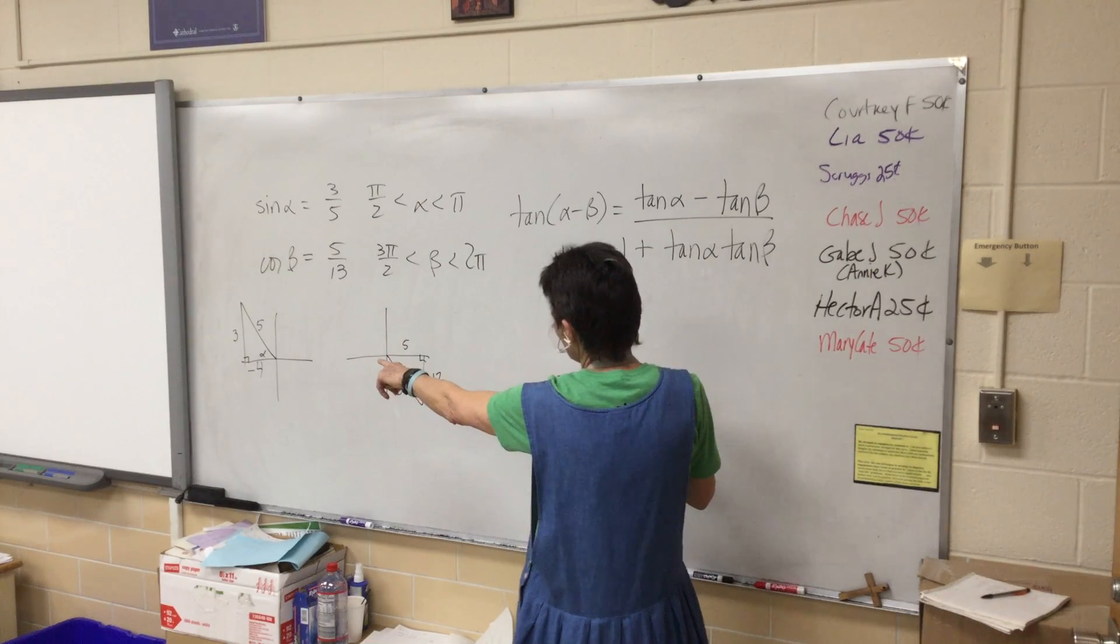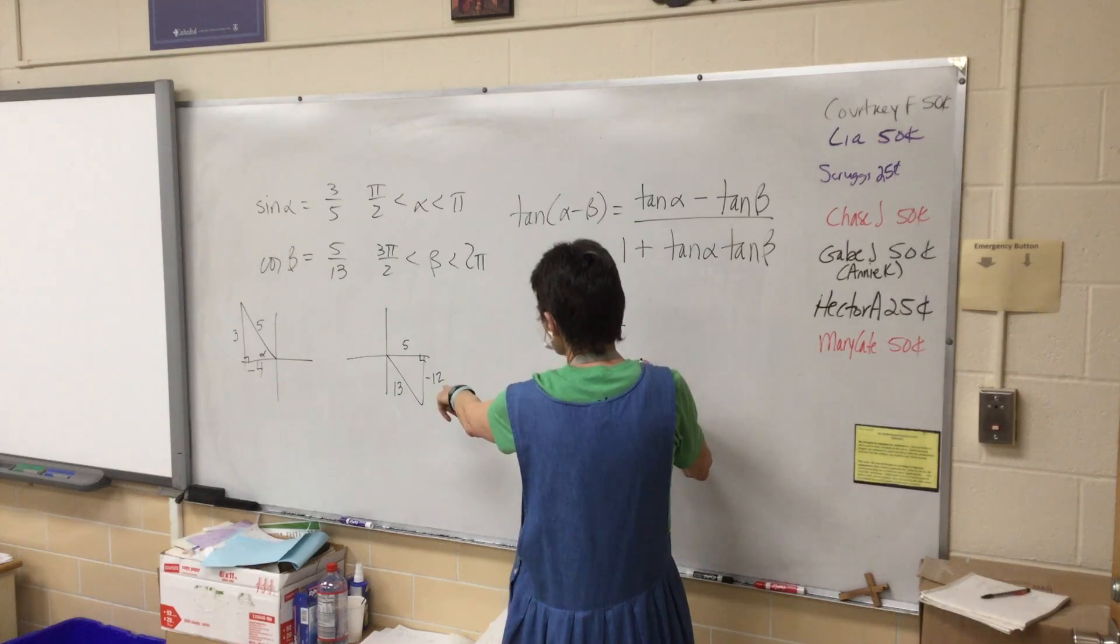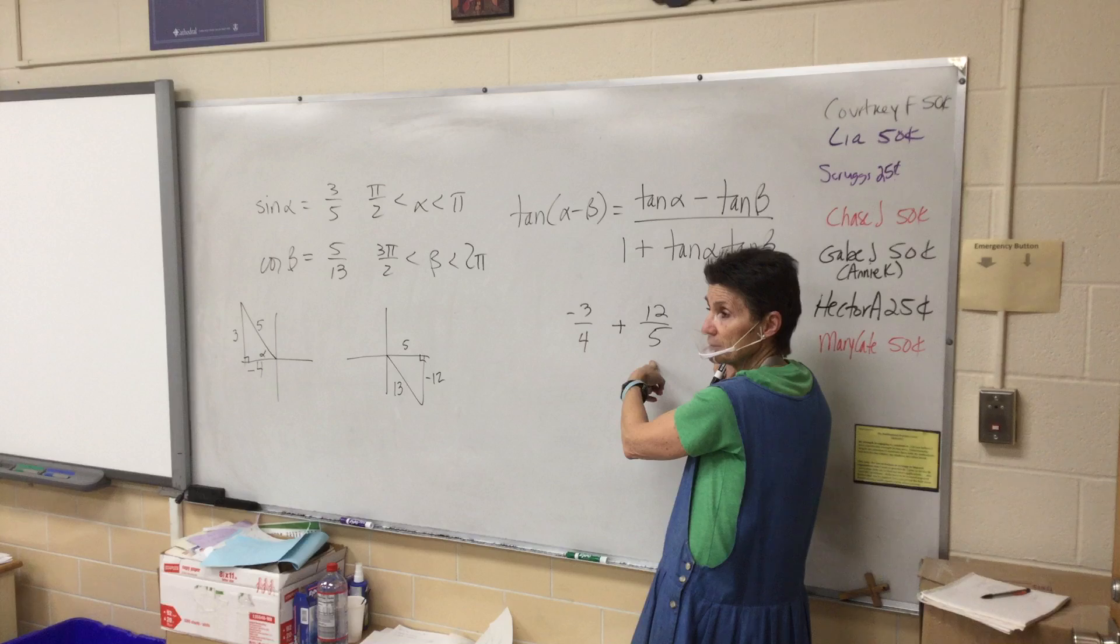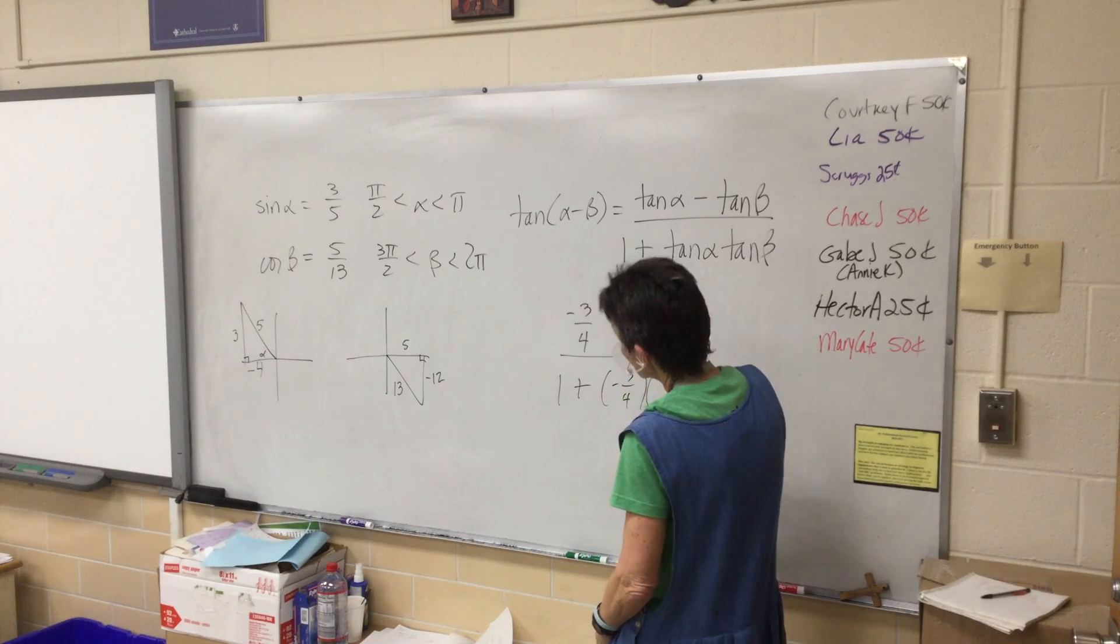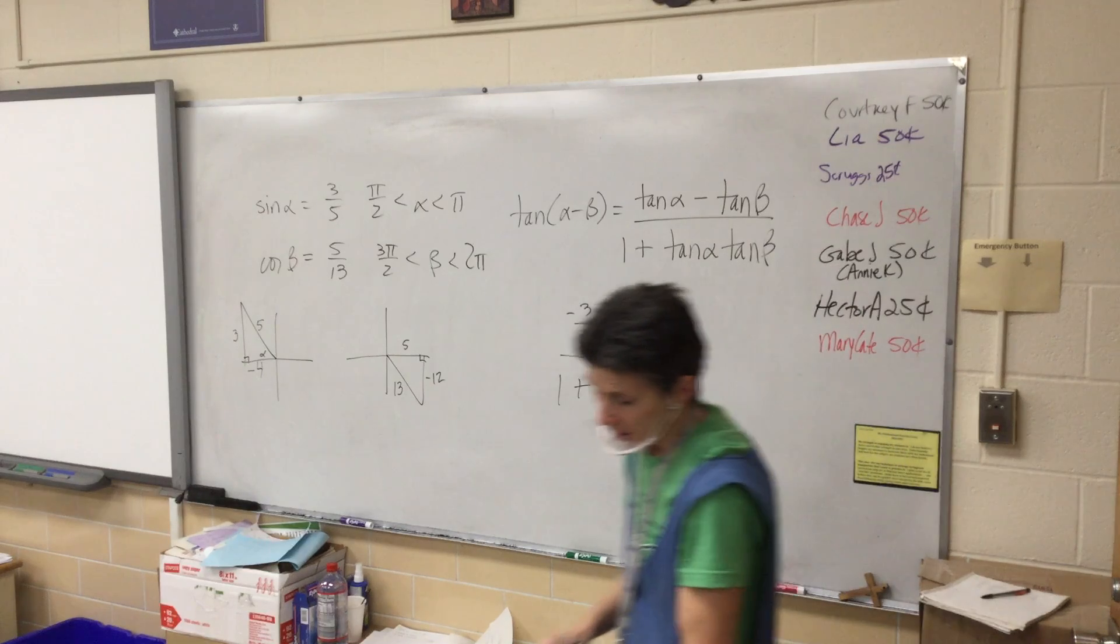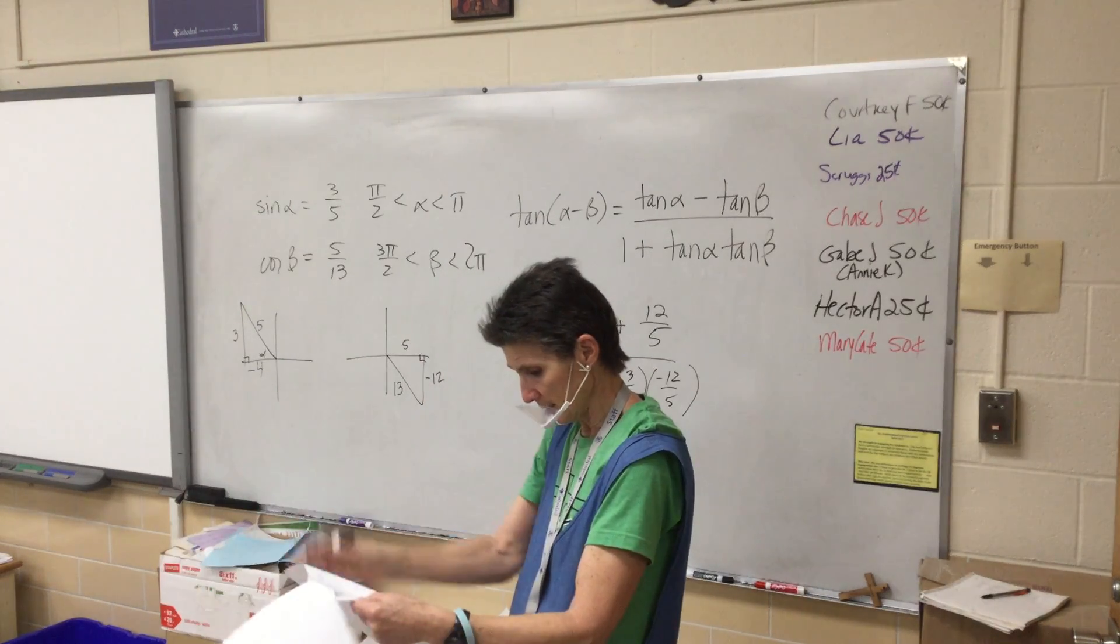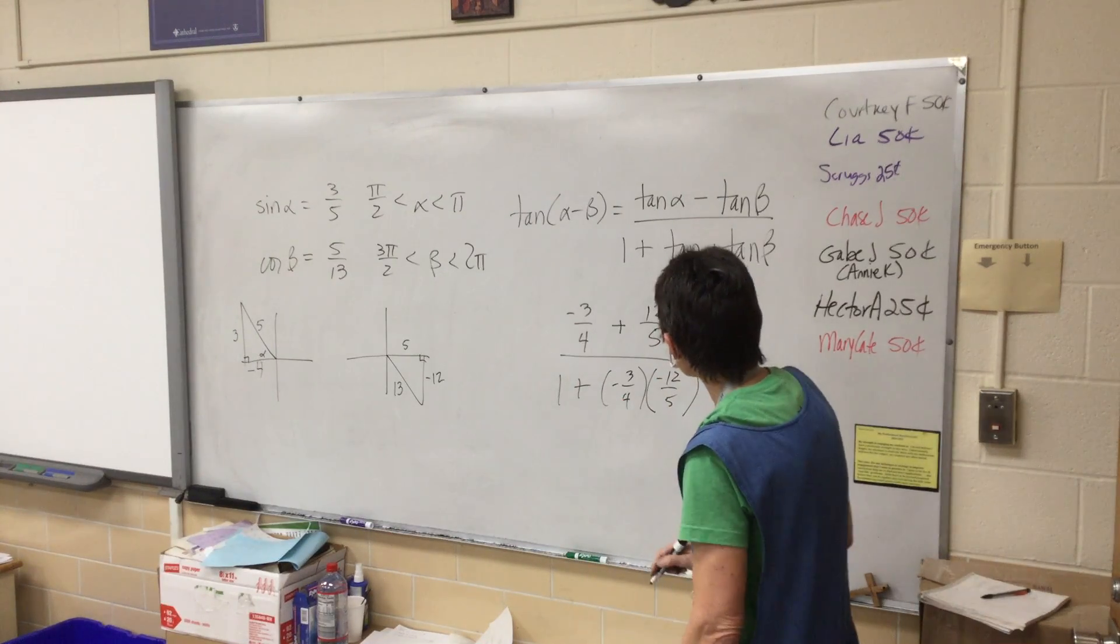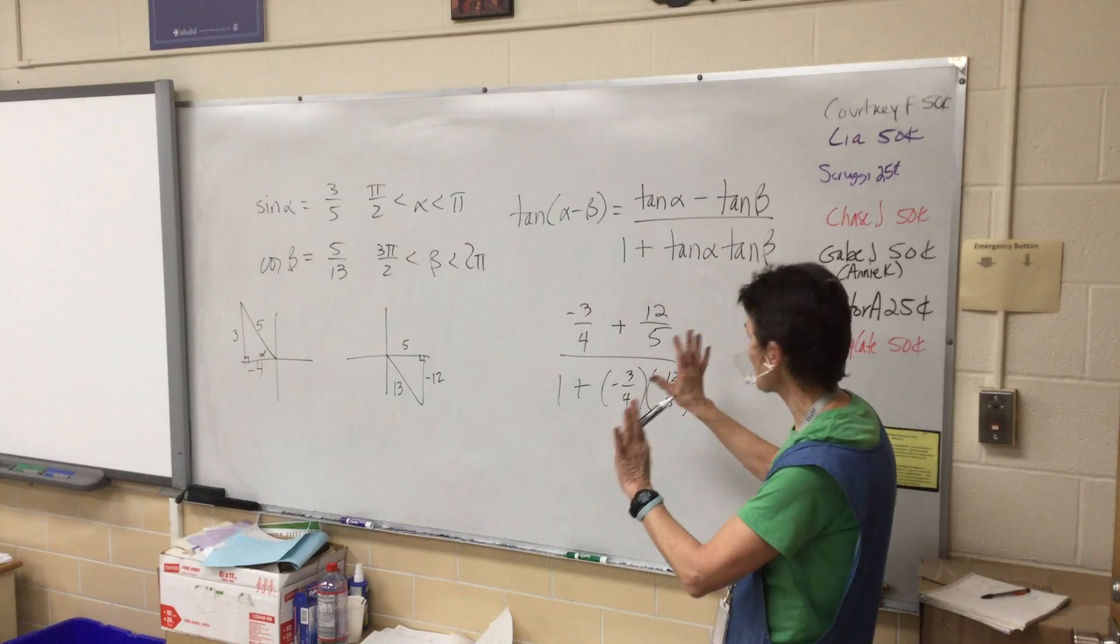So here we go, plug and chug. What's the tangent of alpha? Negative 3 4ths. What's the tangent of beta? Negative 12 5ths. Now I changed that because it was minus a negative, so negative 3 4ths plus 12 5ths over 1 plus tangent alpha tangent beta. Now quick comment. I know you can cancel some stuff here. Don't. You'll see why in a minute. Just leave it. Don't do any extra work.